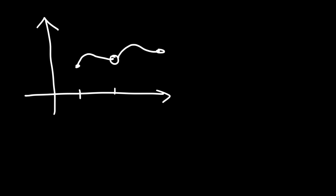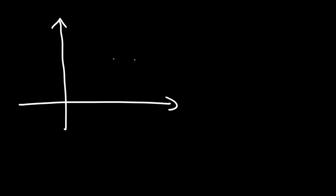This type of discontinuity at point C is known as a hole, which is a type of removable discontinuity. The jump discontinuity is a non-removable discontinuity.